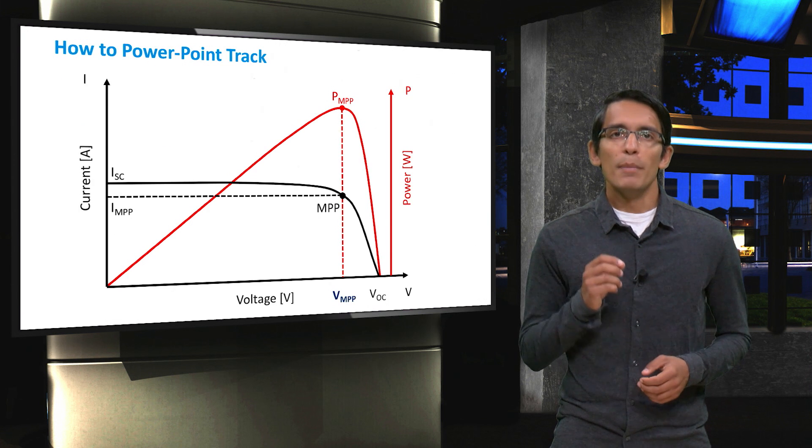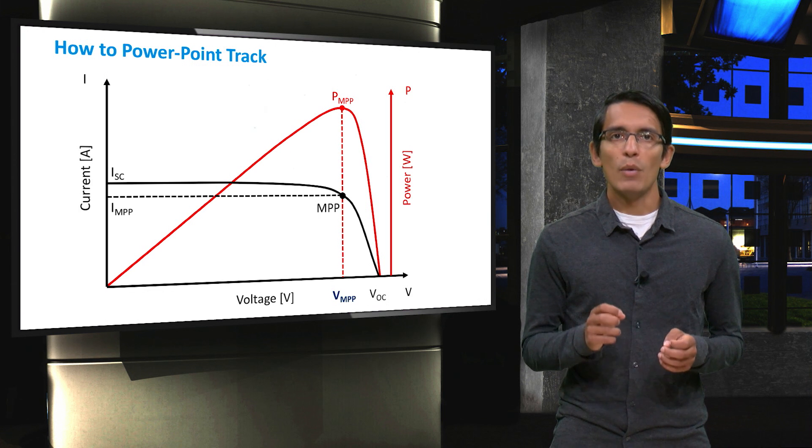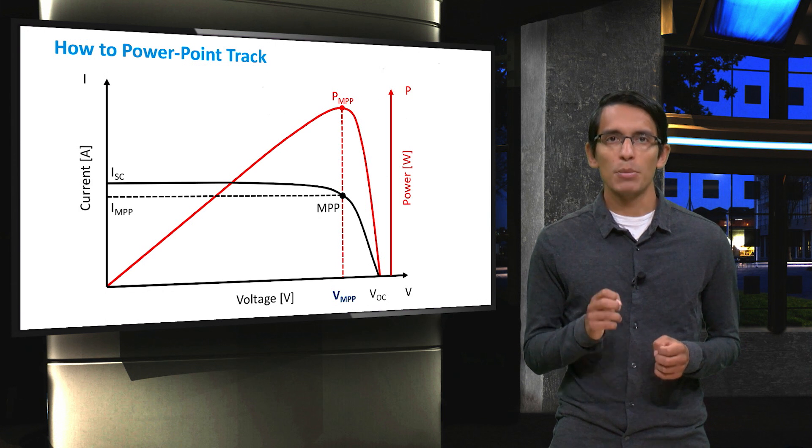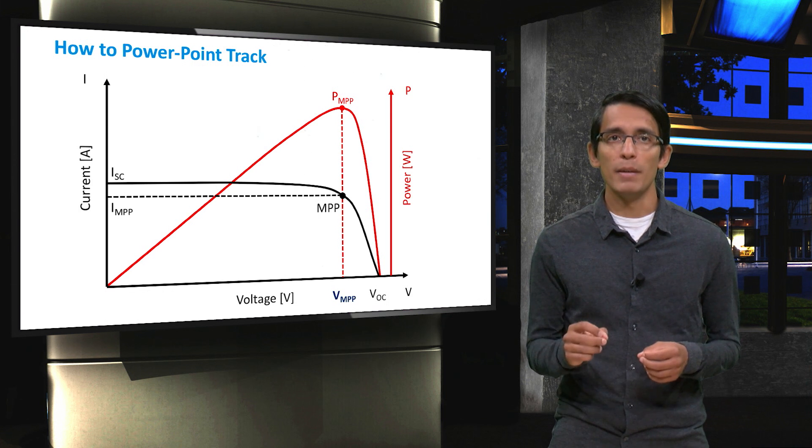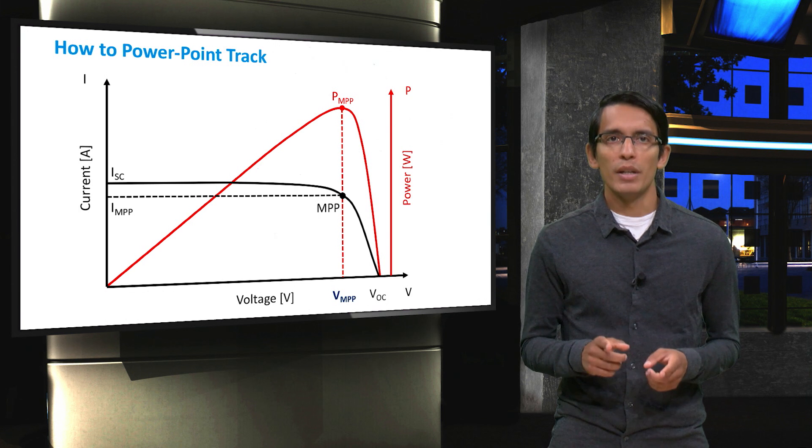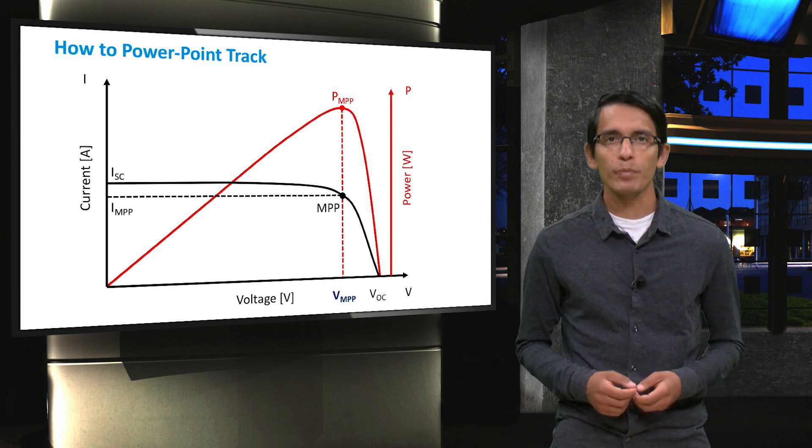Just to recap, the point of a maximum power point tracker is to find the voltage at which the solar panel delivers the maximum power, or VMPP. If we know the VMPP, then we can use power electronics to set that voltage to our solar panel or array of solar panels.